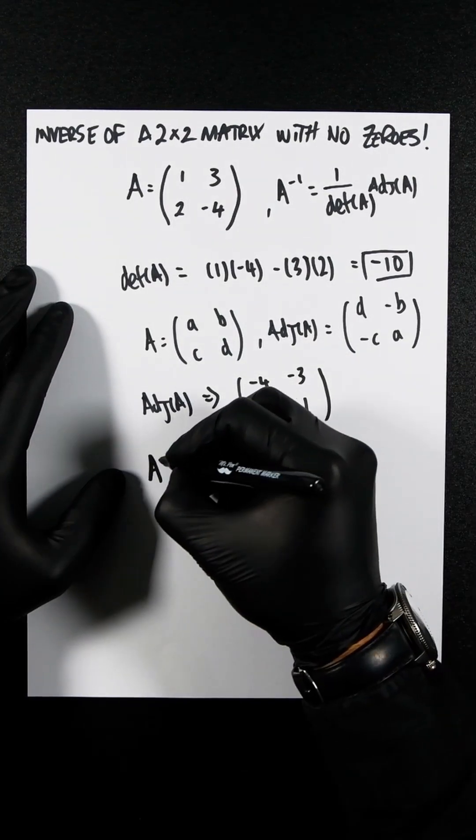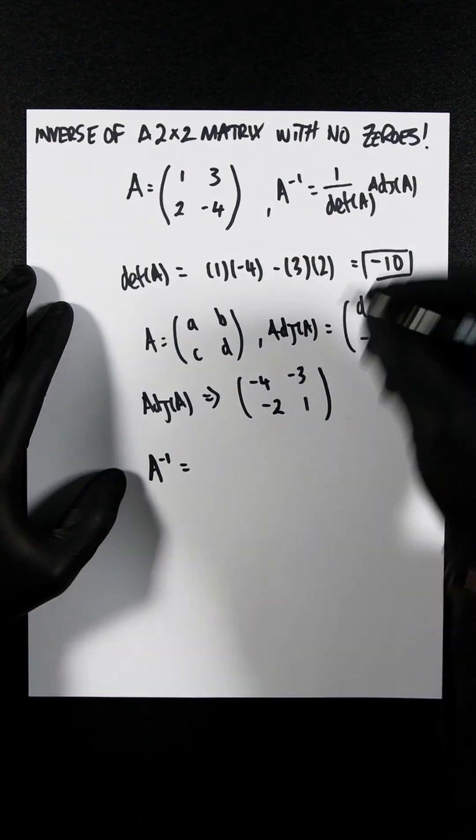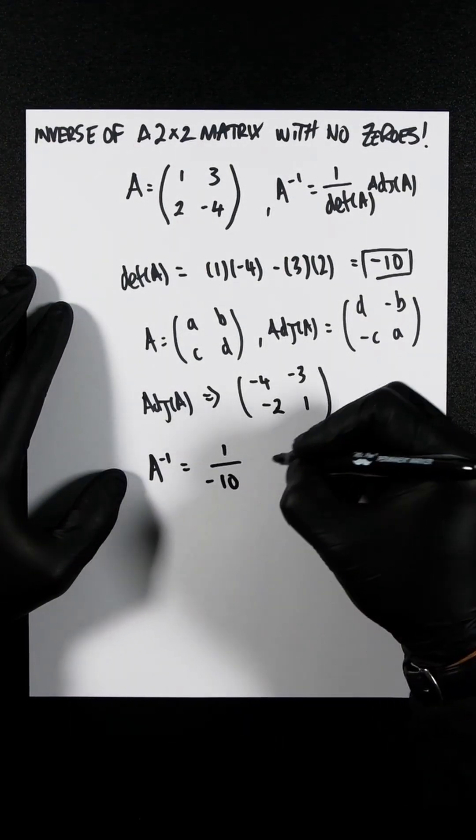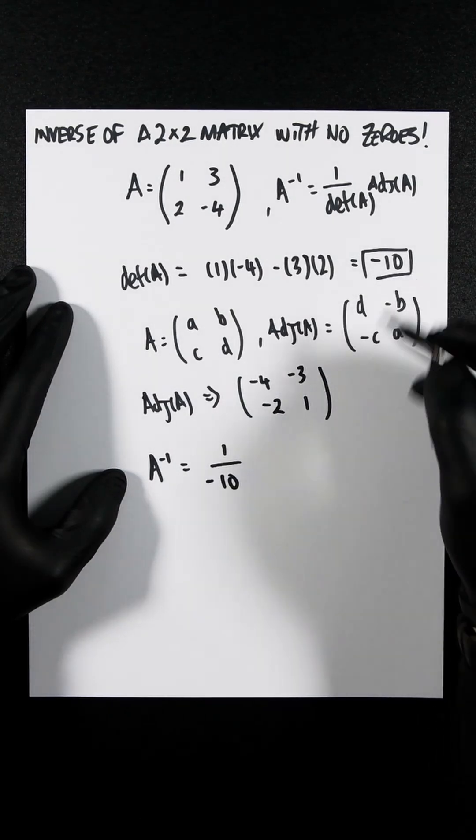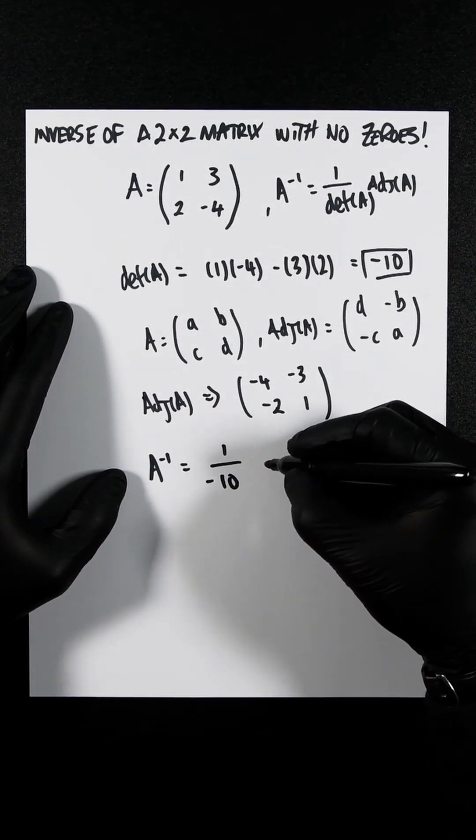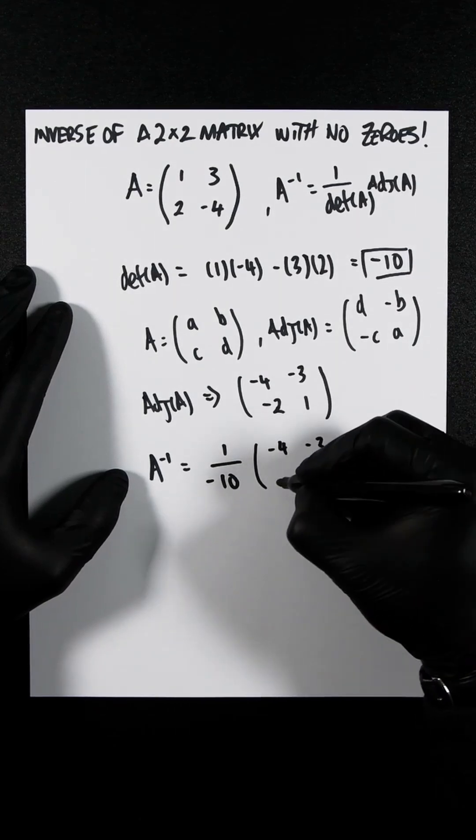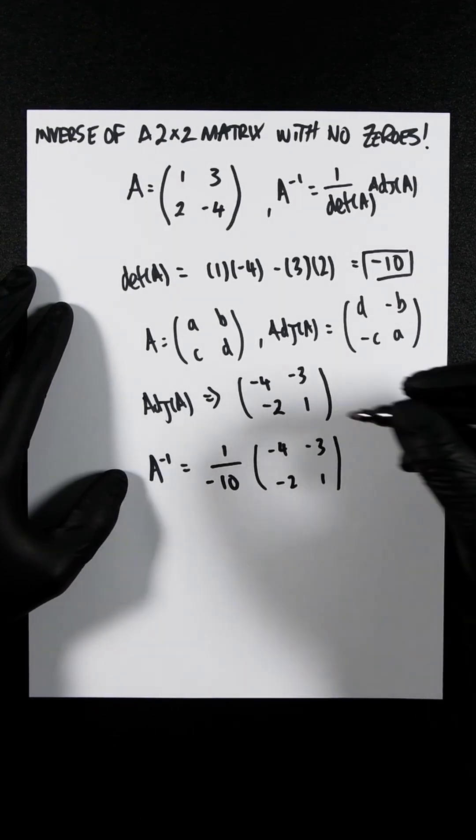Now, we just plug everything into our cute little equation up there. It's very cute. So 1 over minus 10, that's the determinant that we found. And then we have our adjugate A.